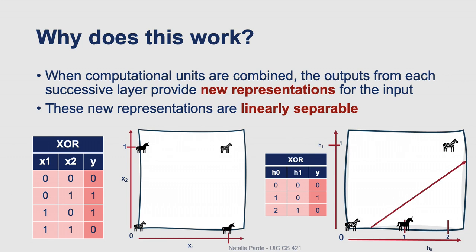The reason why this entire process works is that when we combine computational units, we actually end up creating new representations for our input values. We could consider the output from our hidden layer in this case as its own two-dimensional vector. In our case, the new representations learned by the hidden layer are linearly separable, and we can see that by plotting them here where we're representing outputs of zero as zebras and outputs of one as unicorns. So we move from the unsolvable problem on the left to the easily solvable problem on the right.